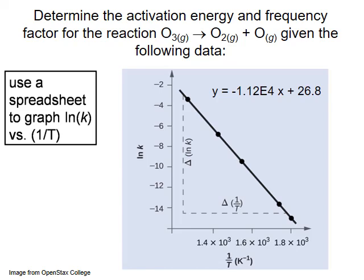We can then use a spreadsheet program like Excel to graph the transformed data and determine the best-fit straight-line equation. Here, the natural log of our rate constants is plotted on the y-axis, while the inverse of each temperature value is plotted on the x-axis. In this case, we get y equals negative 1.12 times 10 to the 4th x plus 26.8.